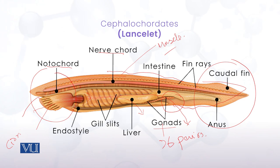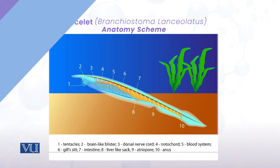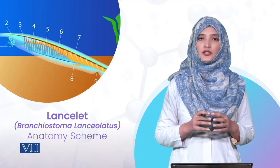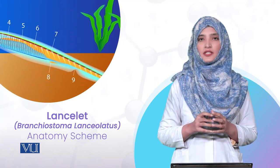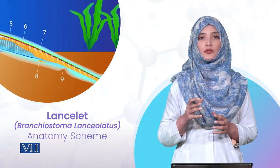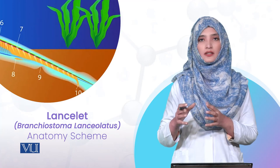Now, talking about habit and habitat — the Lancelet is present in water, in a sandy environment. They have pointed ends and burrow themselves in the sandy environment while protruding out through their anterior ends. When in the adult stage, their mouth part is out of the sand. The larvae are free-swimming and swim through a feeding mechanism. When they reach the adult stage, they settle down at the bottom of the ocean.